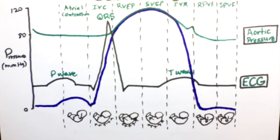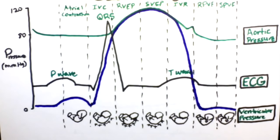The next wave we're going to take a look at is called the ventricular pressure wave. We see a huge spike in the pressure of the ventricle during the isovolumetric contraction phase, because when the ventricle contracts, the pressure inside builds up, going from 0 mmHg all the way up to 120 mmHg. The pressure drops when the ventricle stops contracting during the isovolumetric relaxation phase.